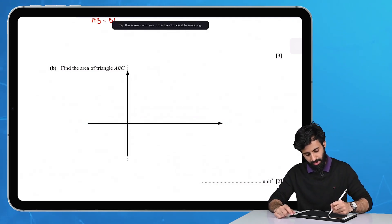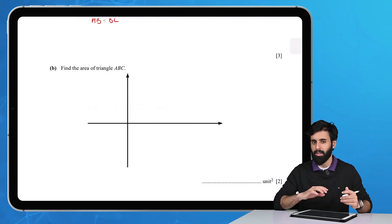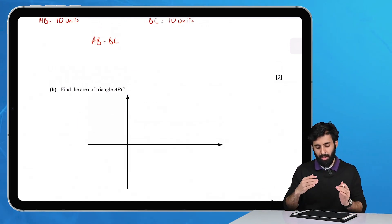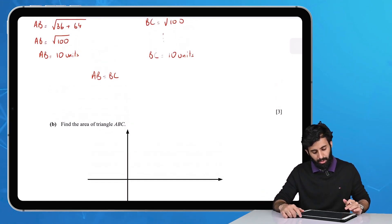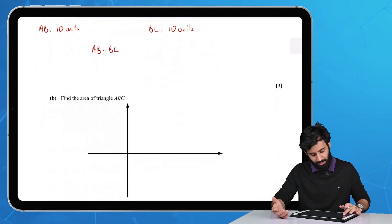That'll give you a better idea of what kind of triangle you're dealing with. You'll be able to identify your base and height better. Point A is (7,0), so it's on the x-axis.